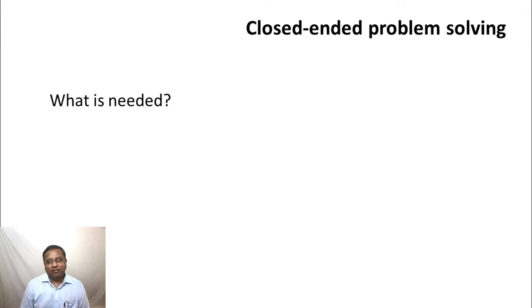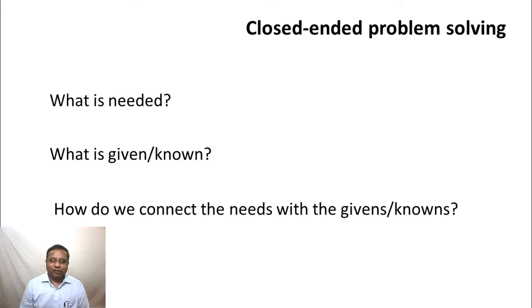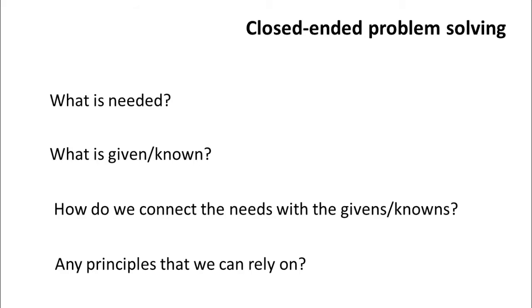The first question to ask is: what is needed? What does the problem want us to find? Once that is clear, write it down. Then ask the question: what is given or known through the problem, through the material that is relevant to the problem that was covered in the lectures? Once both those are clear, then we will ask the question: how do we connect the first one with the second one? How do you connect the needs of this particular problem with the givens or knowns in this problem? And while doing that, we will also ask, are there any basic principles that we can rely on to be able to solve this problem? In fact, while presenting the solution, I am going to use only the first three: what is needed, what is given or known, how do we connect the needs with the givens and knowns, and take this as a part of the third aspect. Now, let us go about solving the problem that is posed.